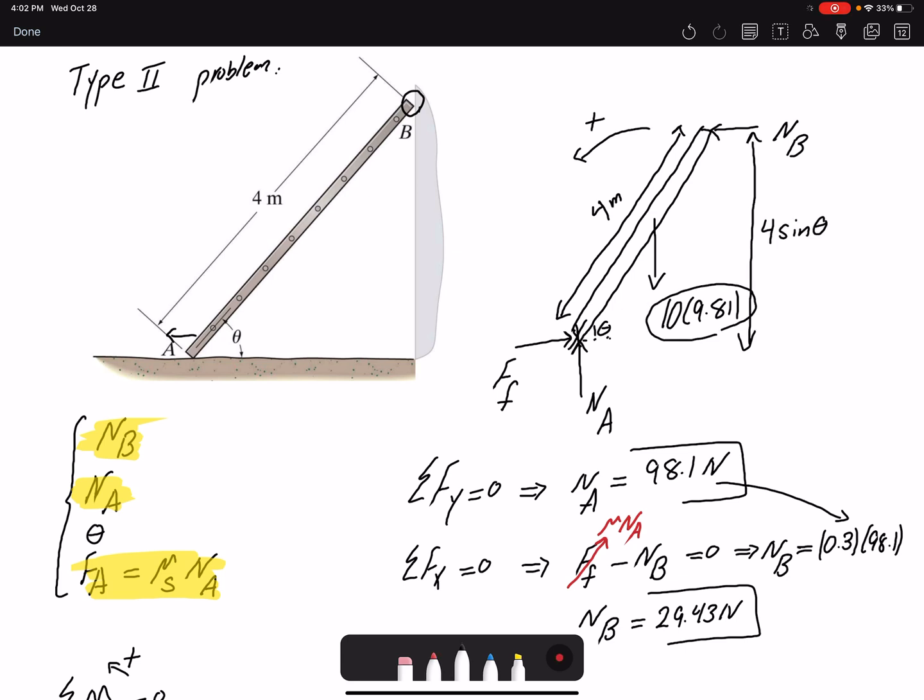And what is the moment arm for my weight? That would be this distance. If the total distance is 4 meters, here would be 2 meters, so this distance would be 2 cosine theta.